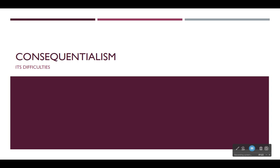The utilitarian thesis is that the right act is the act that maximizes good consequences, where good is understood as tending to promote pleasure or happiness, or the act that minimizes bad consequences, where bad is understood as tending to produce pain or unhappiness. We looked at considerations that make this plausible; now let's look at some criticisms of the view.